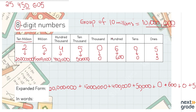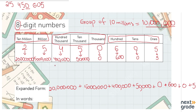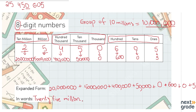Now let's make groups of place values. These three place values we read together and write together in word form. The other three place values we read separately and write separately in words. Let's start writing in words. We have ten millions and millions together — that is twenty million plus five million — so we write it as twenty-five million.